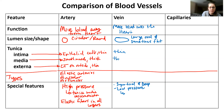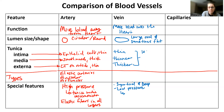Veins have a much thinner tunica media because they're not doing vasoconstriction and vasodilation — they're not regulating blood pressure. Their connective tissue on the outside is thicker. They also have less elastic fibers, mostly because they don't need them. Since they're under lower pressure, they don't need to recoil as much.